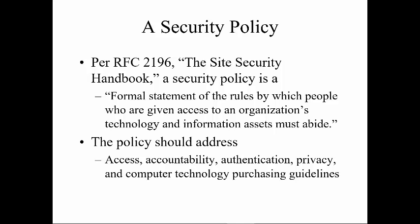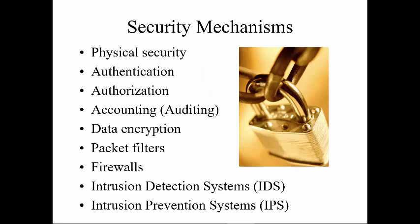A policy should address access, accountability, authentication, privacy, and technologies, but should also talk about enforcement. Having a rule but never enforcing it does no good. Security mechanisms could include AAA — authentication, authorization, accounting — as well as physical access like access control, magnetic locks, or locking doors. It could also include technology assets like data encryption, filtering software, firewalls, and IDS/IPS.